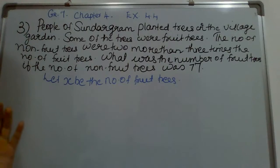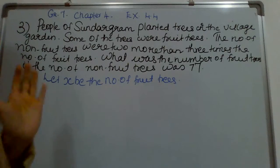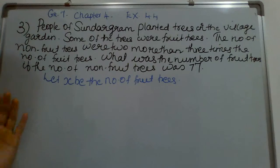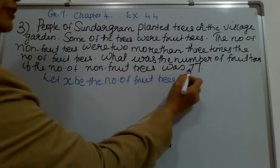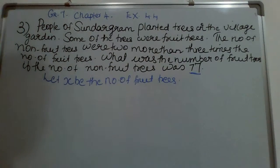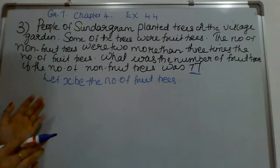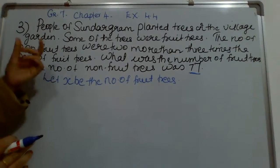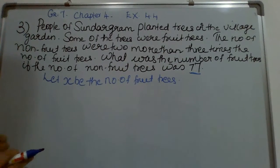Now I will explain the question. Here it is given that the number of non-fruit trees was 77. And there is a relation between the number of fruit trees and non-fruit trees. That relation is that the number of non-fruit trees were 2 more than 3 times the number of fruit trees.